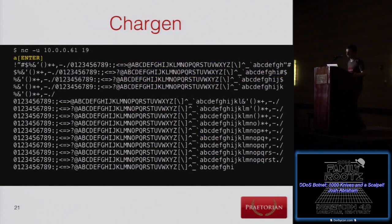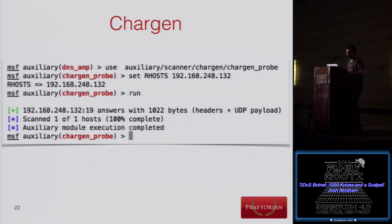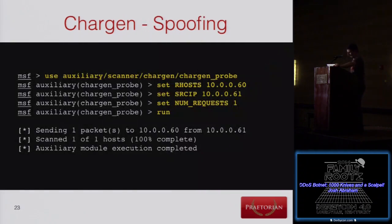Coming back to the Chargen service: we connect to it over UDP, send an 'A,' and the flood of data comes back — the magnitude is clear. In Metasploit, we load the chargen module, set the RHOST flag, and run. For spoofing, we set the source IP and the number of requests. Looking at a TCP dump comparison: on the right is the request, on the left is the massive response, demonstrating the scale of data coming back.